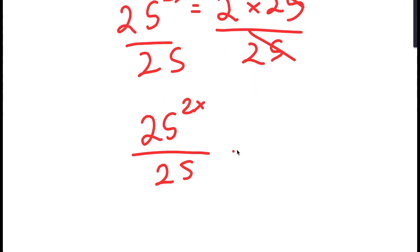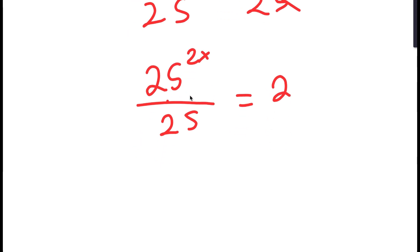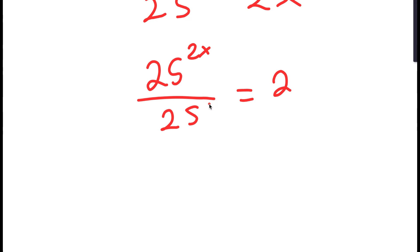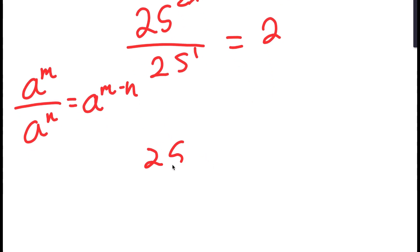So I have 25 to the power of 2x over 25 is equal to 2. And now from here, 25 is the same thing as 25 to the power of 1. So if I have something in the form a to the power of m over a to the power of n, this is equal to a to the power of m minus n. So it's equal to 25 to the power of 2x minus 1 is equal to 2.